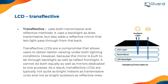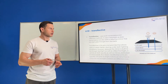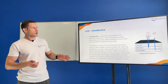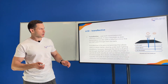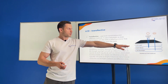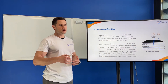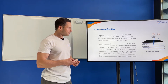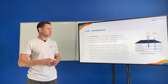The last display type is transflective — a combination between a transmissive display and a reflective display, so it uses both phenomena: reflection and transmission of light. To use both, we need something called a semi-mirror — a mirror that is reflecting roughly half of the light while also being transparent to the other half of the light.